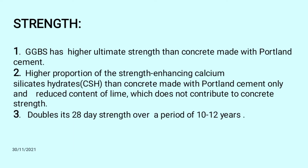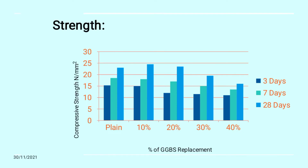Strength: First, GGBS has a higher ultimate strength than concrete made with Portland cement. Second, a higher proportion of strength-enhancing calcium silicate hydrates than concrete made with Portland cement only, and a reduced content of lime which does not contribute to concrete strength. Third, it doubles the 28-day strength over a period of 10 to 12 years. Here we can see the variation of compressive strength at 3 days, 7 days, and 28 days according to the percentage of GGBS used in plain cement concrete.